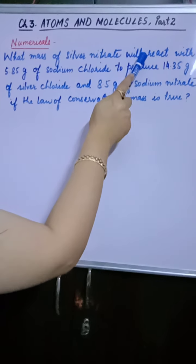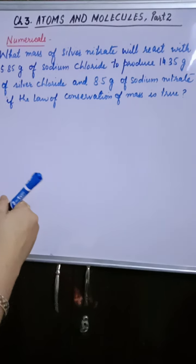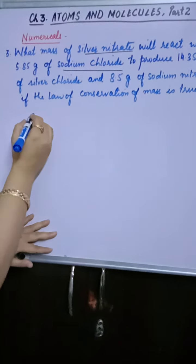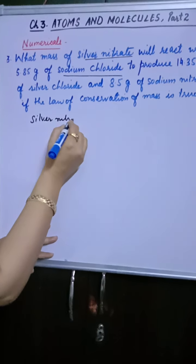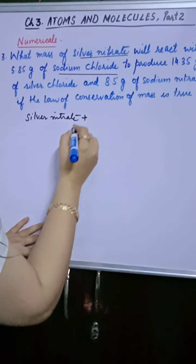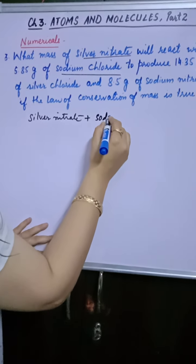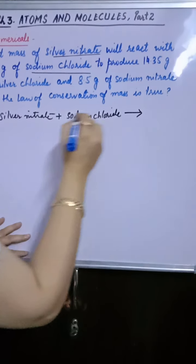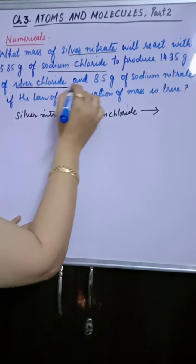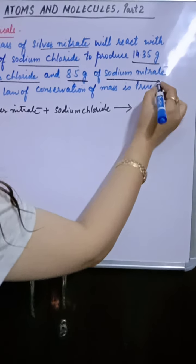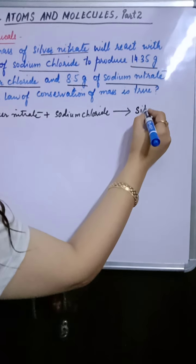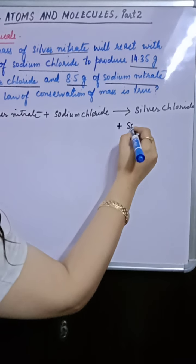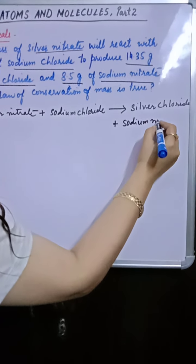What mass of silver nitrate will react with 5.85 gram of sodium chloride to produce 14.35 gram of silver chloride and 8.5 gram of sodium nitrate if the law of conservation of mass is true? So what mass of silver nitrate will react? We easily know that silver nitrate is the reactant, will react with sodium chloride. So you can write word equation: silver nitrate plus sodium chloride gives you silver chloride plus sodium nitrate. This is the equation for this reaction.